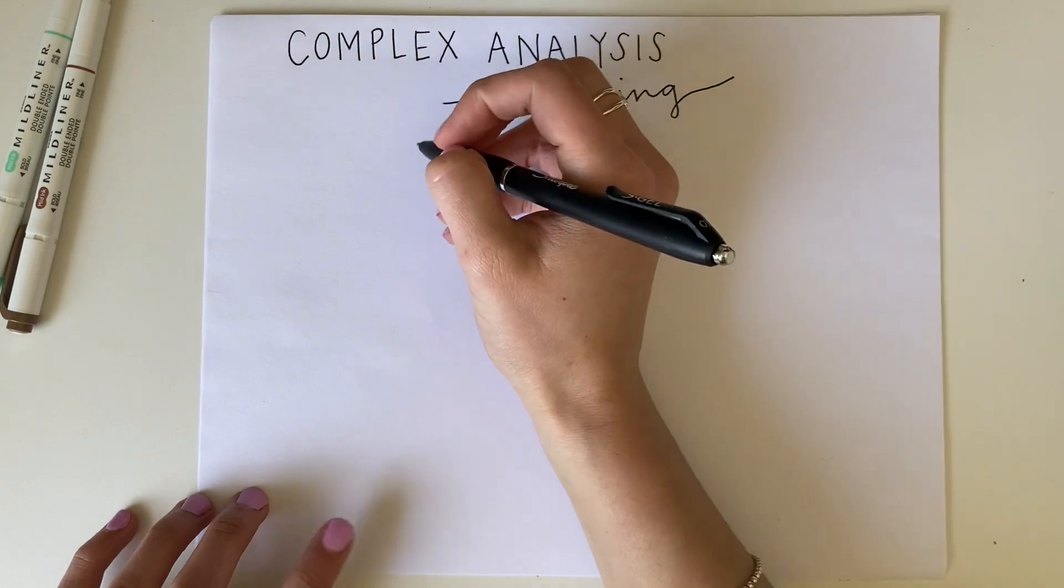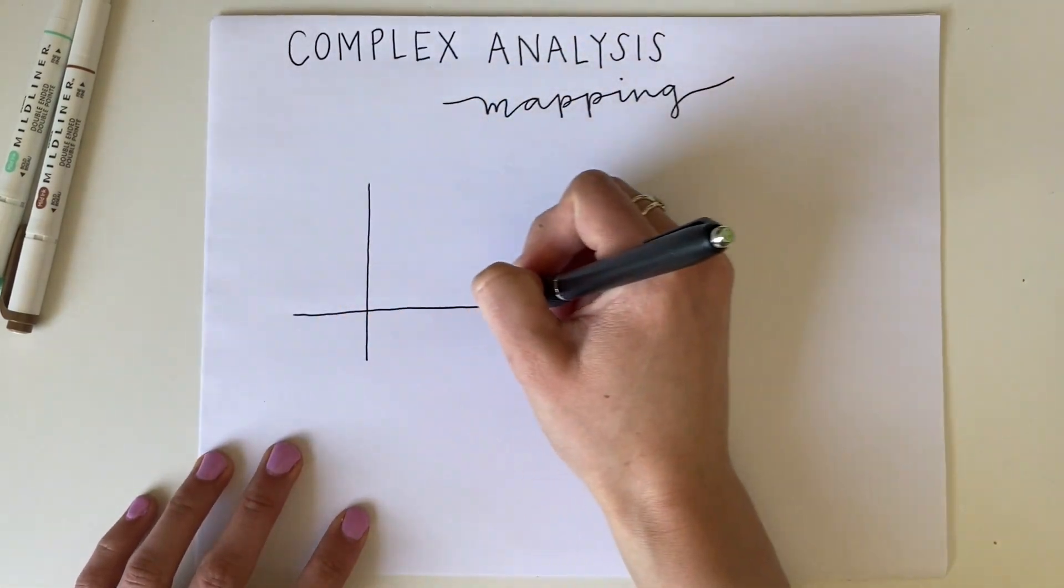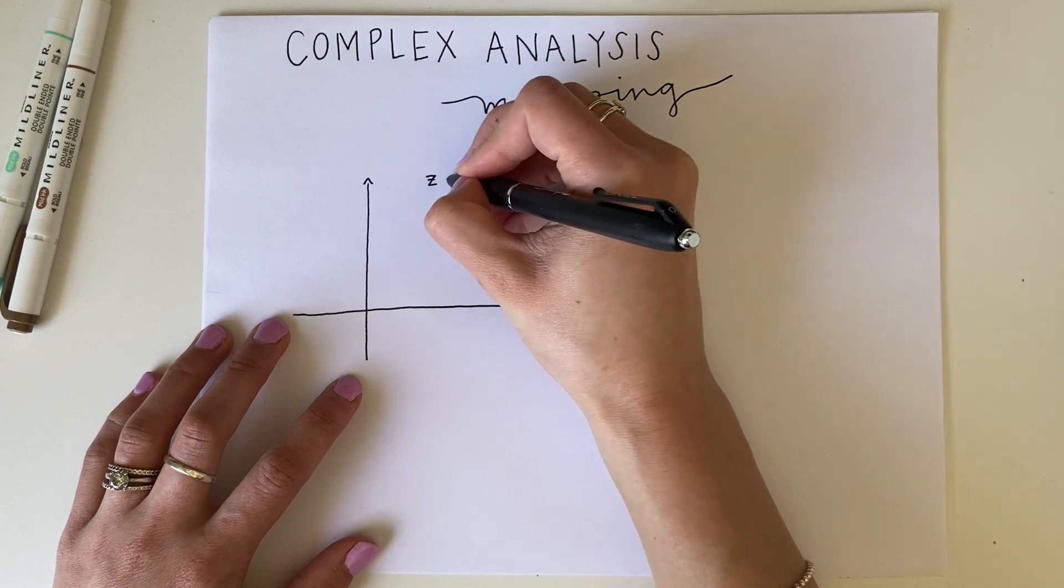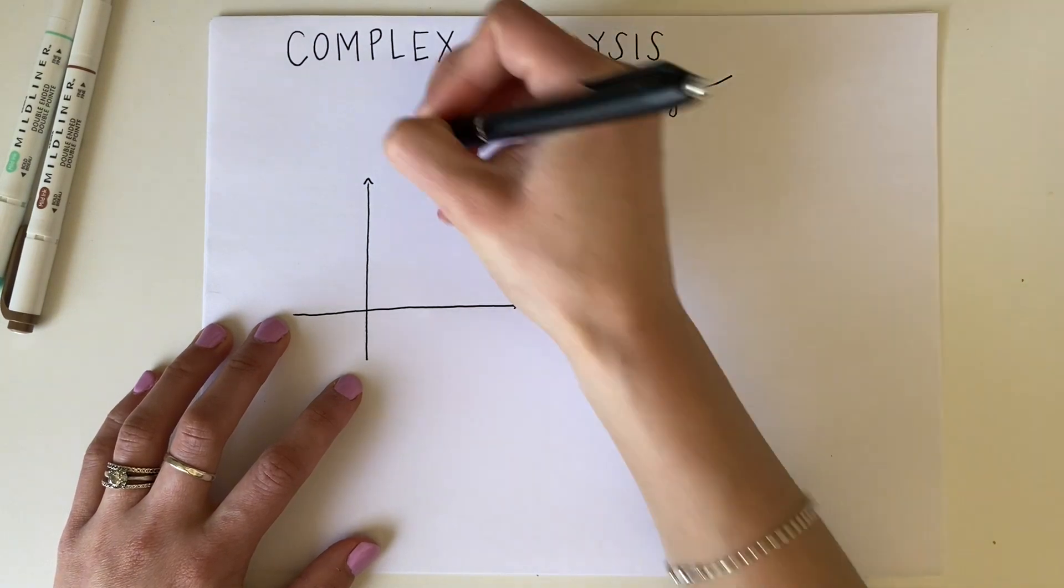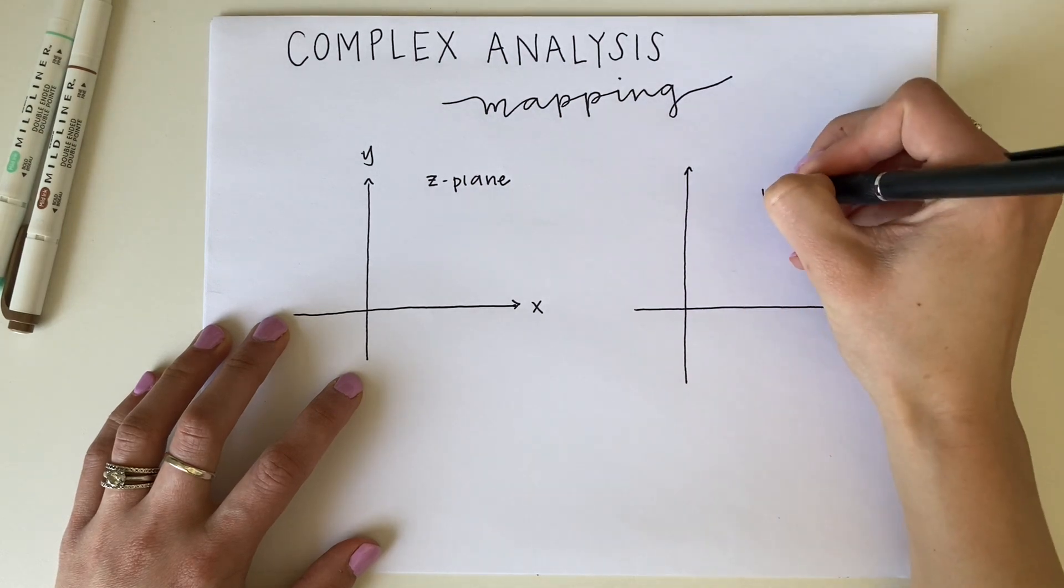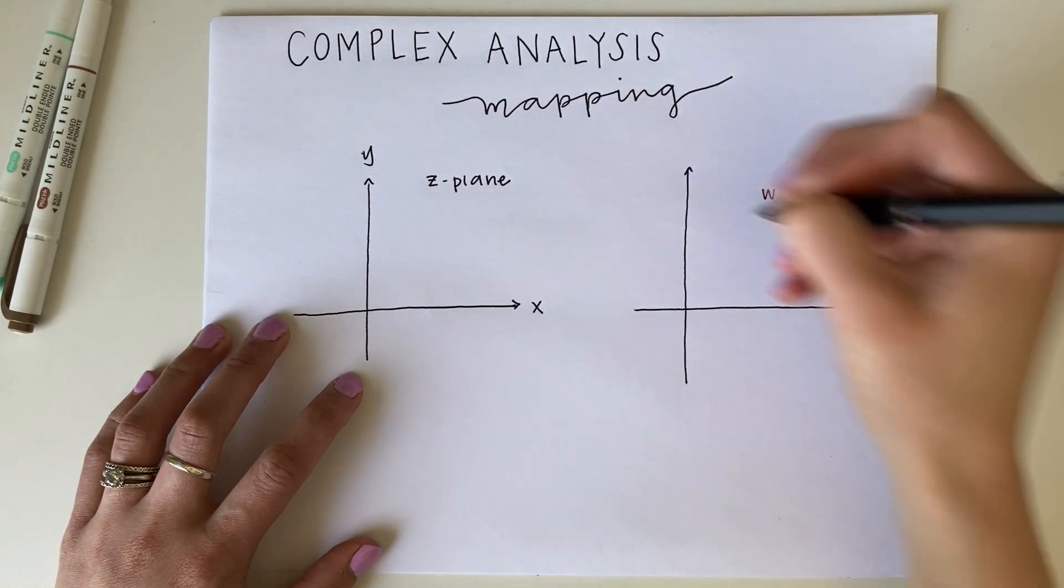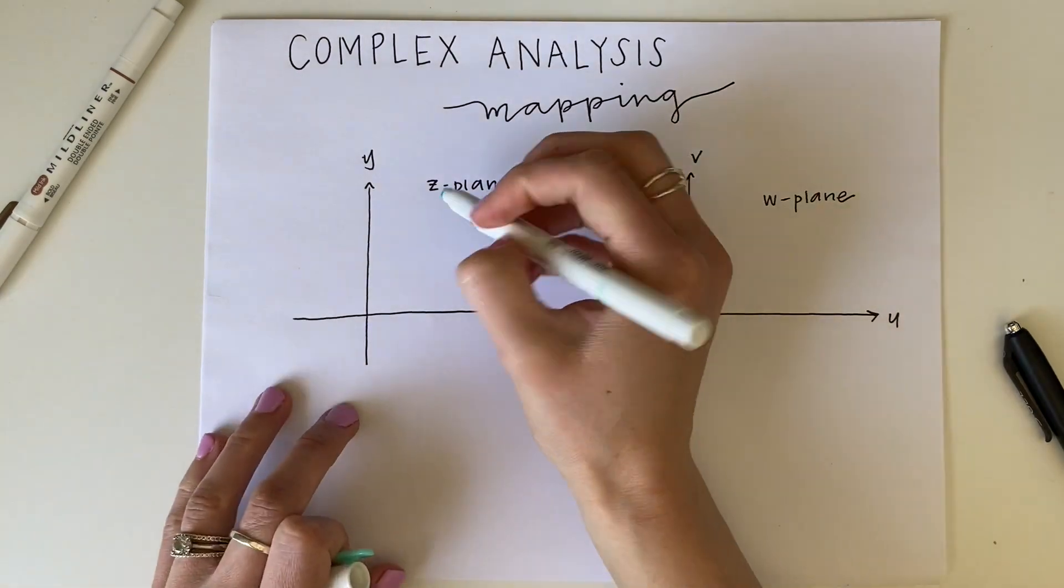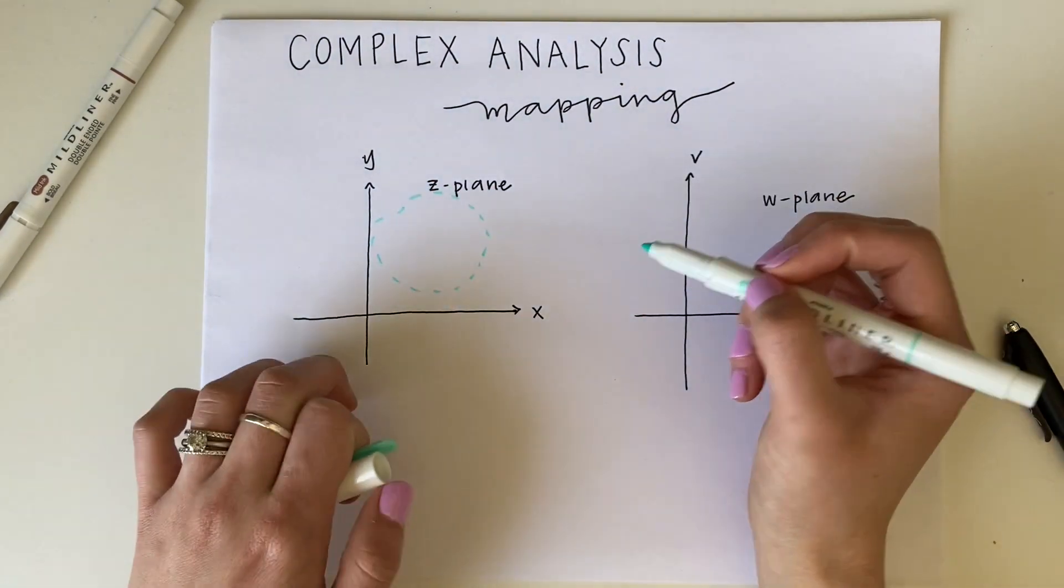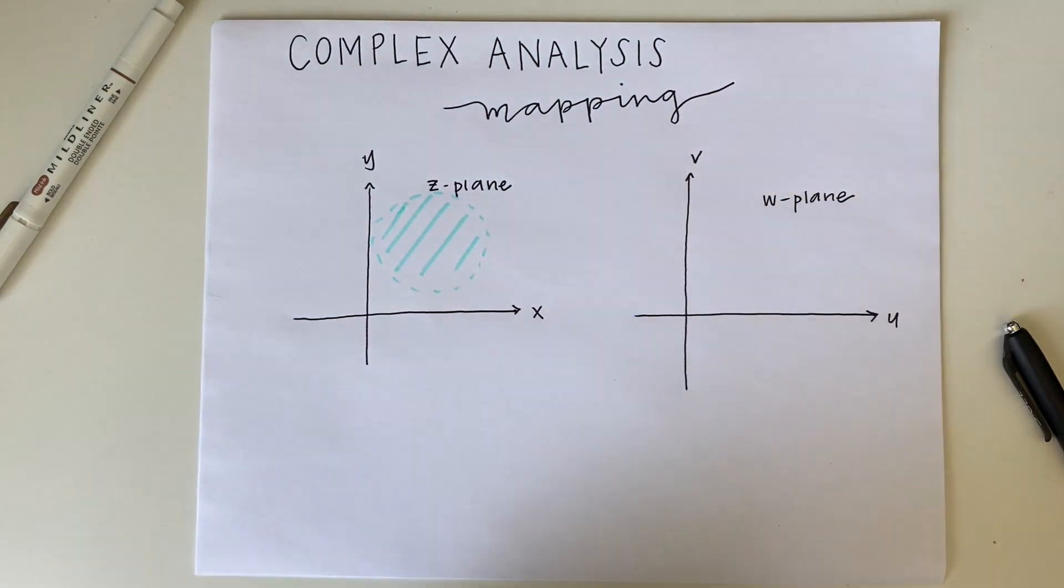Unlike in the real number space where we can graphically represent a function in two-dimensional or three-dimensional spaces, in complex analysis, often with a function that goes from the complex space to the complex space, we are in the fourth dimension because each complex space has two dimensions, x and y and u and v. So this is where mapping comes in.